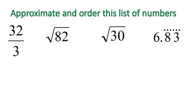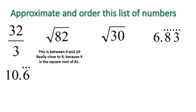32 over 3 is 32 divided by 3, which will give you 10.6 repeating. The square root of 82, this is between 9 and 10. 9 is the square root of 81, and 10 is the square root of 100. So it's between 9 and 10, and it's really close to the 9. It's just above the 9, because 9 is the square root of 81. So I'd approximate this one as 9.1.